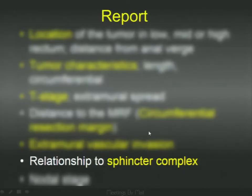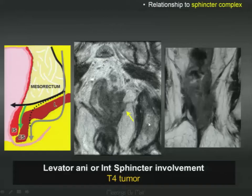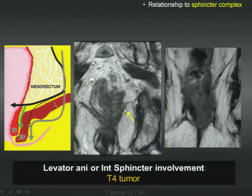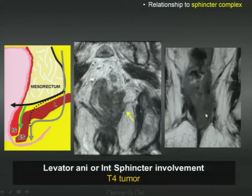Relationship to the sphincter complex: if you have rectal cancer that involves the levator ani or the internal sphincter, that is considered T4 disease. It's important to emphasize this to the referring oncologist because they will triage the patient accordingly.